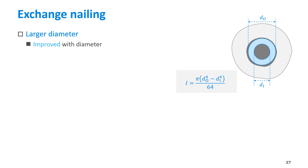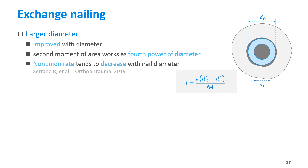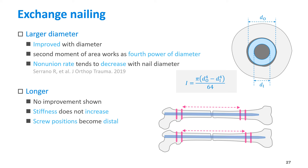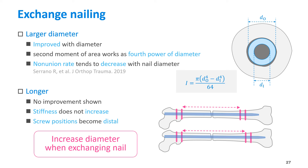Regarding exchange nailing, improvement was observed in tensile failure risk and instability at the fracture site by increasing the diameter. This is because the second moment of area works as the fourth power of diameter. Clinical reports have also shown a decreasing trend in non-union rate with increasing diameter. On the other hand, simply lengthening the nail did not result in improvement, because the stiffness does not change and the screw fixation becomes more distal in longer nails, which may increase the instability of the fracture site. It is important to increase the diameter when exchanging the nail.